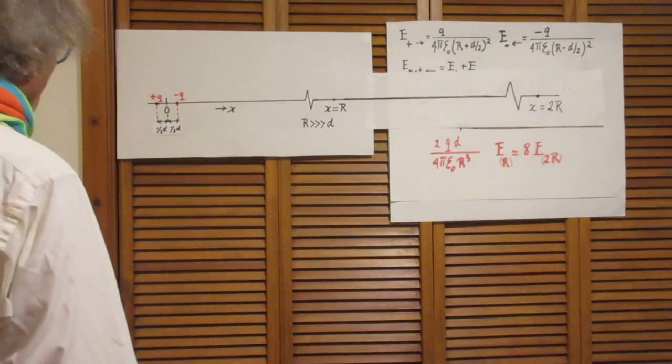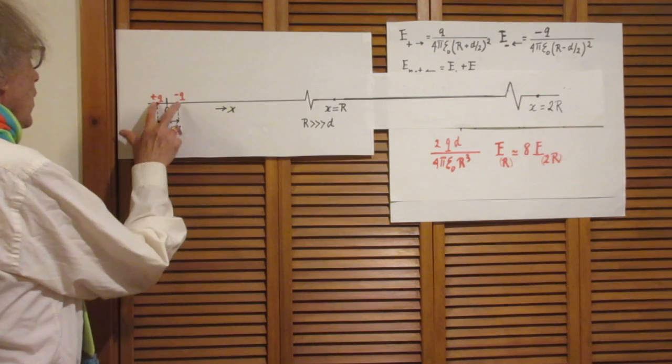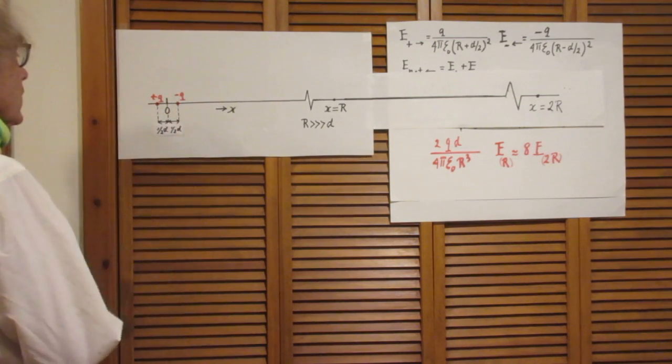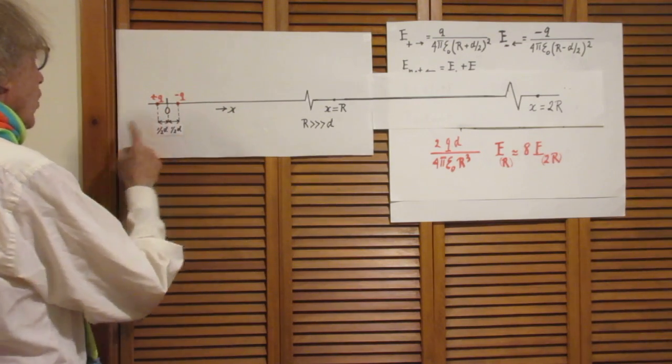Here is an electric dipole, charge minus Q and charge plus Q, a distance d apart. Right in the middle between the two I define x equals 0.